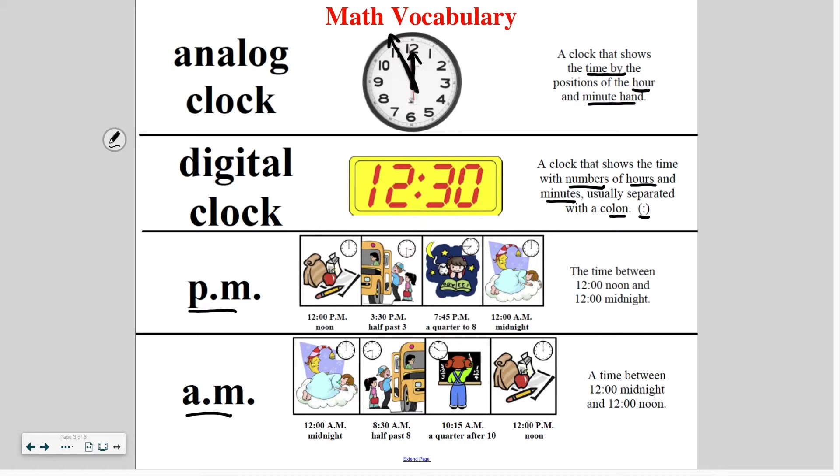So PM is the time between 12 noon and 12 midnight. And AM is the time between 12 midnight and 12 noon. So PM is usually the afternoon and evening. And AM is the morning hours.